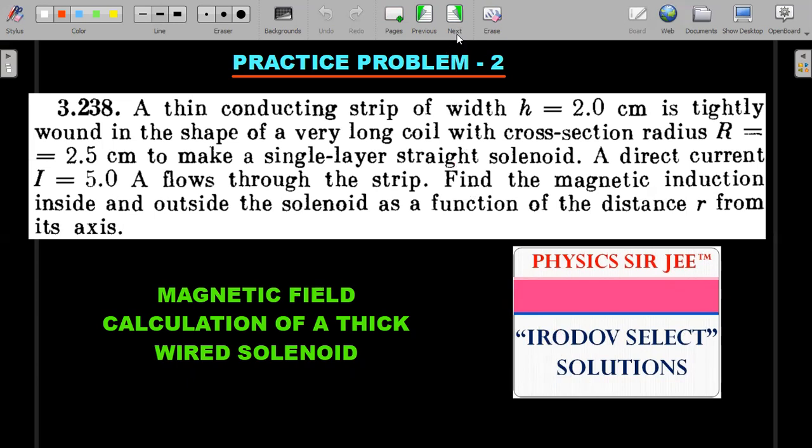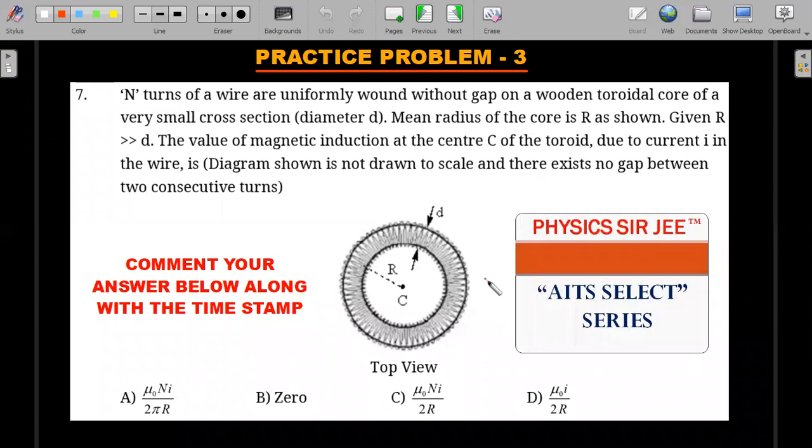Extending this idea, there's another question inspired by 3.238 that I made for one of the AITS examinations four years back. This is for a thick wire toroid—consecutive turns with no gap, but wire has thickness. You're supposed to calculate magnetic field at the center of the toroid here. Comment your answer along with the timestamp; options are here. I will respond or give the solution in the AITS select series.